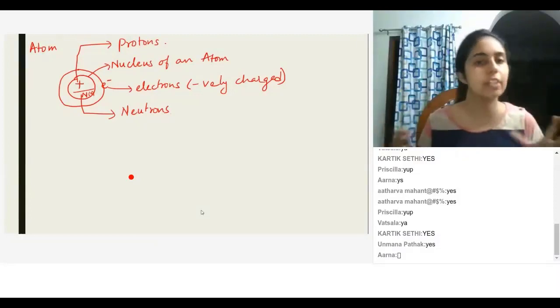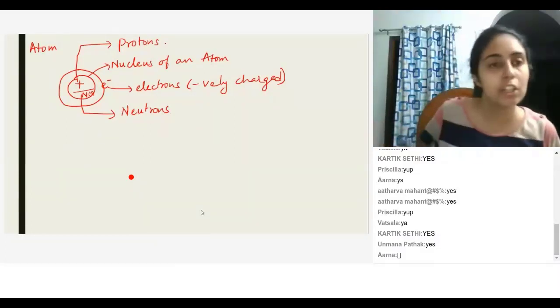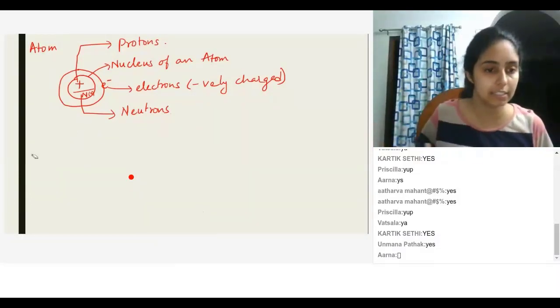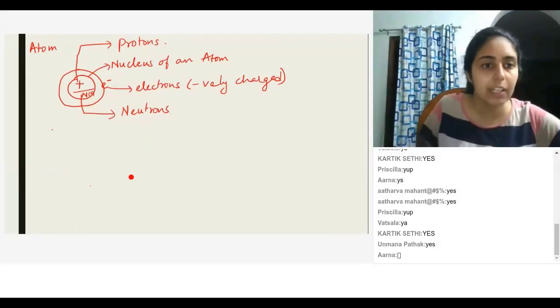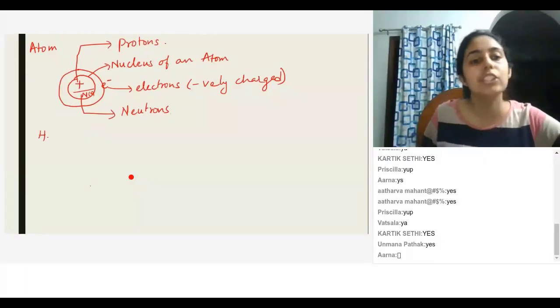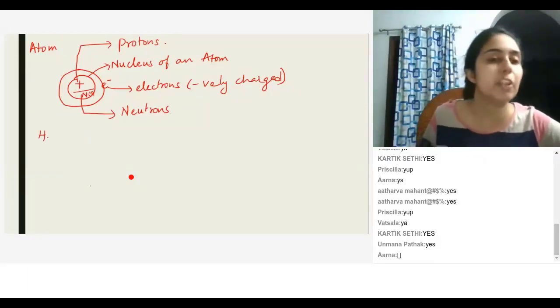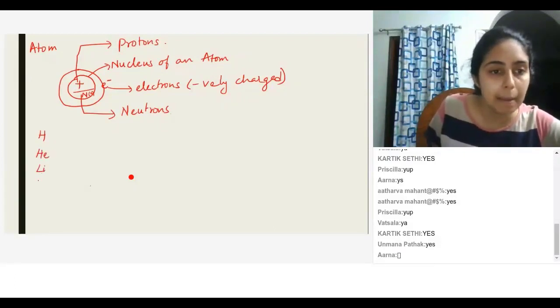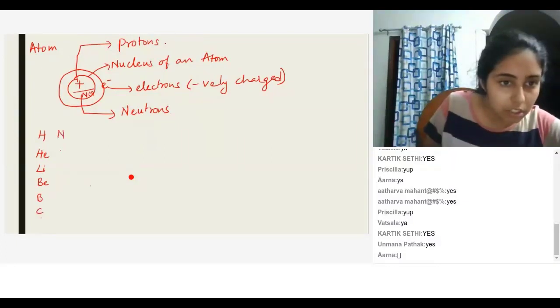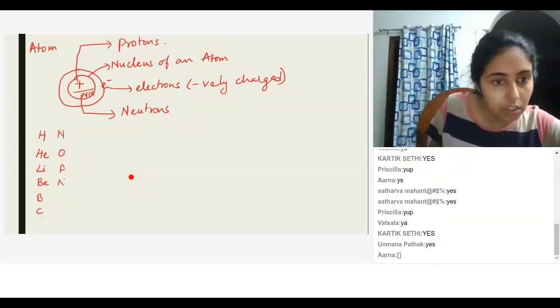Let's take a look at how that is the case. So let's start with hydrogen. Hydrogen is the first element of the periodic table. The second element of the periodic table is helium, the third is lithium, beryllium, boron, carbon, nitrogen, oxygen, fluorine, neon, sodium, magnesium, aluminum, silicon, phosphorus.